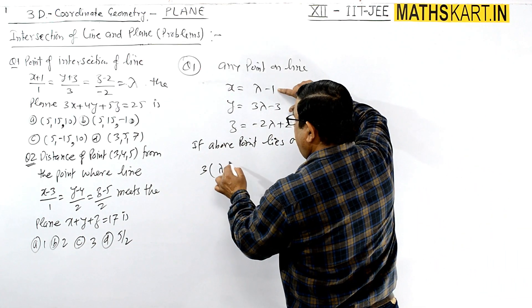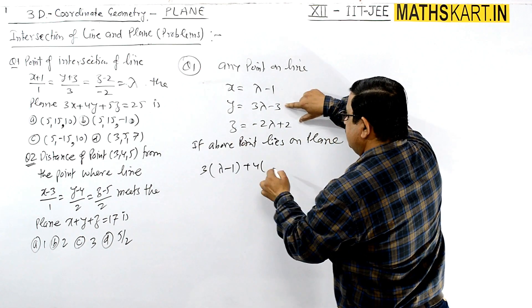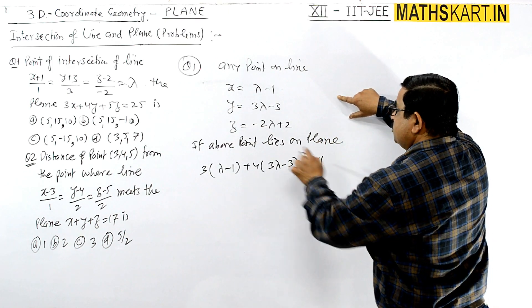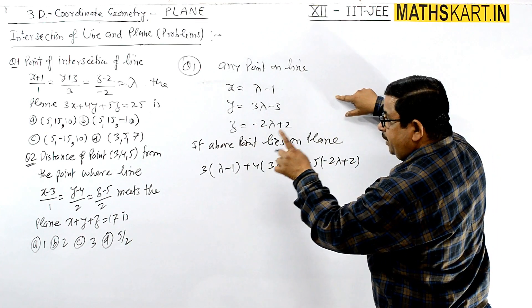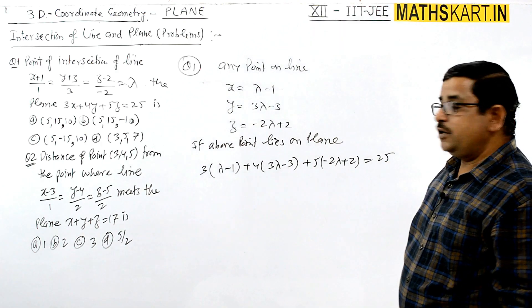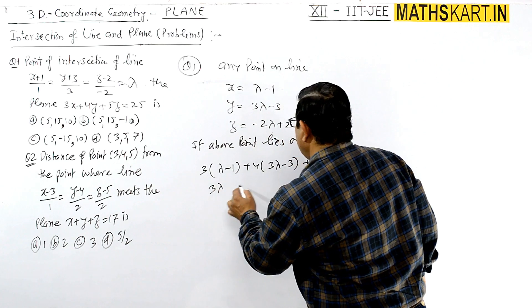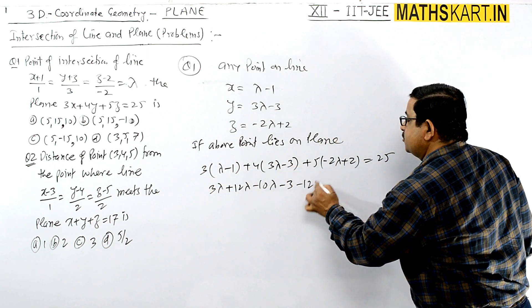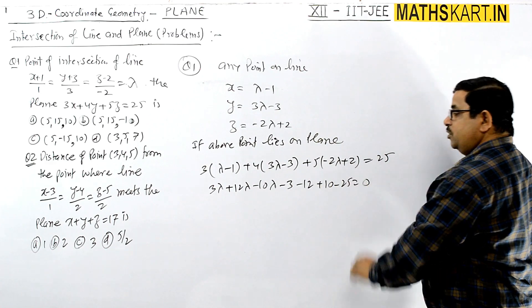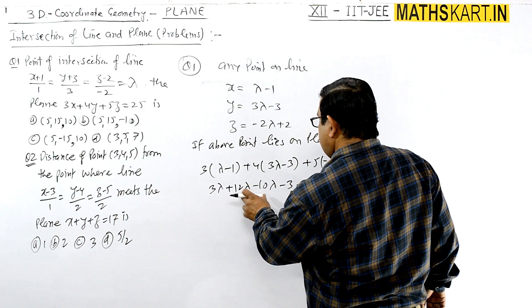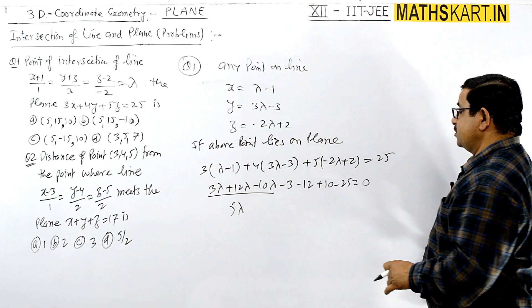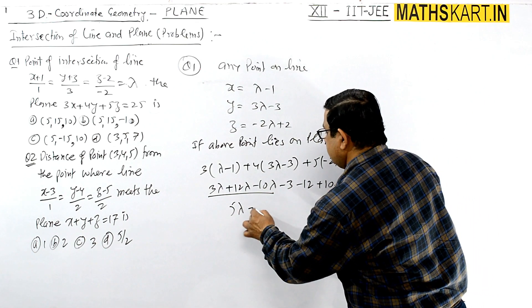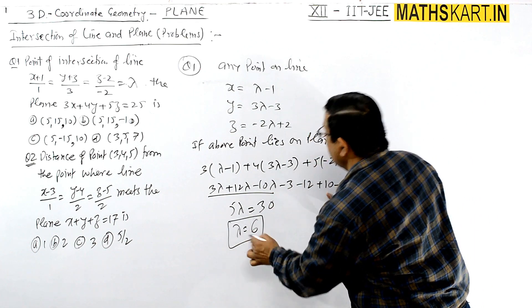Substituting into the plane equation: (λ - 1) + 4(3λ - 3) + 5(-2λ + 2) = 25. Expanding: λ + 12λ - 10λ = 3λ, and constants: -1 - 12 + 10 - 25 = -28. Wait, simplifying: 3λ - 15 - 25 = 0, giving 5λ = 30, so λ = 6.